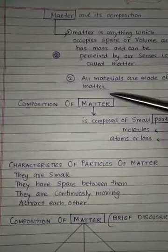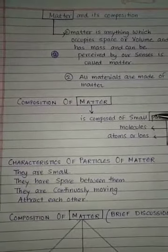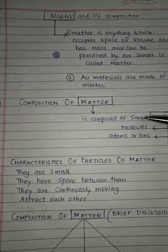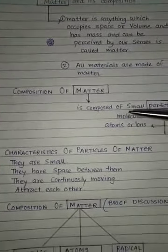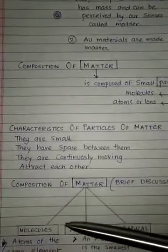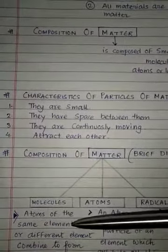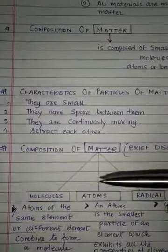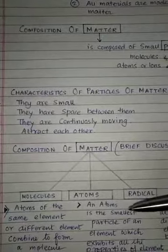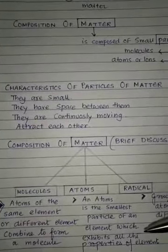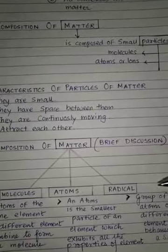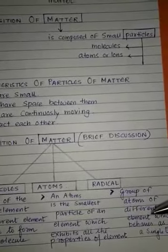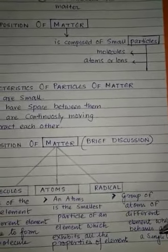We have discussed that matter is composed of small particles like molecules, atoms, or ions. Now let's have a brief discussion on each. What is a molecule? Atoms of the same element or different elements combine to form a molecule. What is an atom? An atom is the smallest particle of an element which exhibits all the properties of that element. And what is a radical? A radical is a group of atoms of different elements which behaves as a single unit.